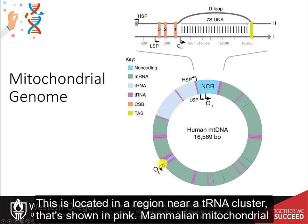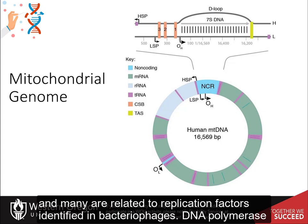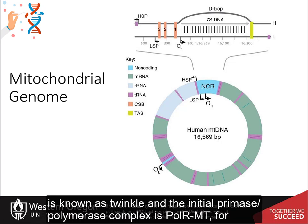This origin of replication for the light strand is located in a region near a tRNA cluster, shown in pink. Mammalian mitochondrial DNA is replicated by proteins distinct from those used in nuclear DNA replication, and many are related to replication factors identified in bacteriophages. DNA polymerase gamma is the main replicative polymerase in mitochondria. The helicase used in the process is known as twinkle, and the initial primase-polymerase complex is pol-RMT.